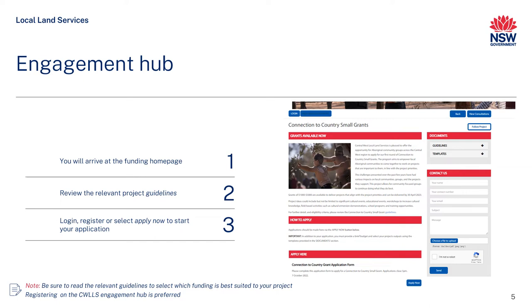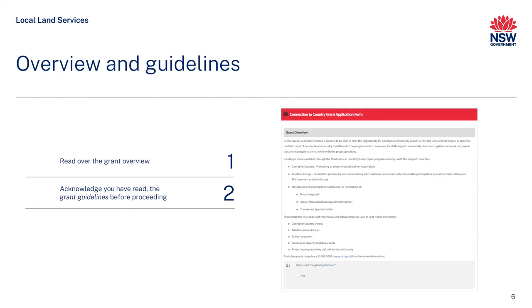Should you choose not to register, you can still make an application by clicking Apply Now and entering your basic contact information. An overview of the grant you are applying for is provided. You must acknowledge that you have reviewed and read the relevant guidelines to ensure your eligibility before proceeding with your application.